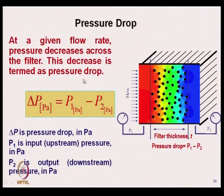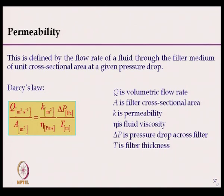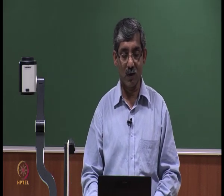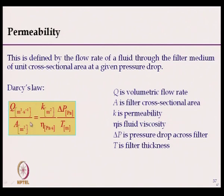We need lower pressure drop so that the fluid flows with low resistance. Permeability is defined by the flow rate of a fluid through the filter medium of unit cross-sectional area at a given pressure drop — simply the air permeability or water permeability of the filter medium. As per Darcy's law, permeability K depends on volumetric flow rate Q, cross-sectional area A, fluid viscosity, pressure drop, and filter thickness.